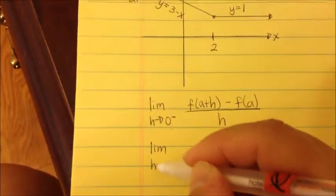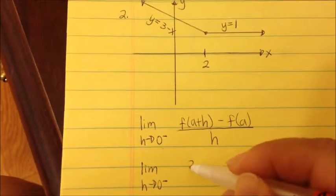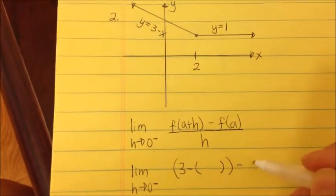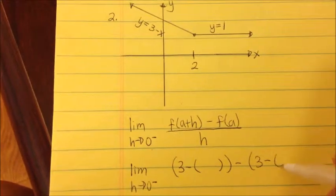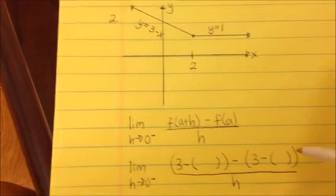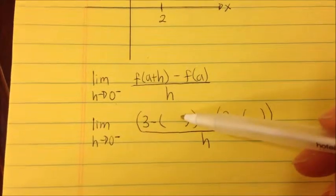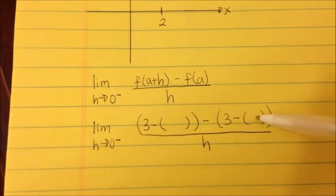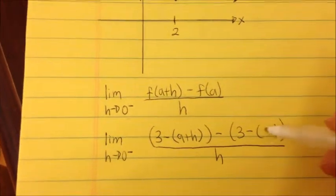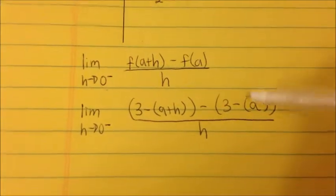So the limit as h approaches 0 from the left-hand side. I'm going to write 3 minus, put parentheses to mimic the equation, minus 3 minus parentheses, all over h. That way it's easier to see what you're substituting in. The first part is where we substitute a plus h, and the second part is where we substitute a.